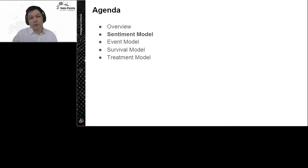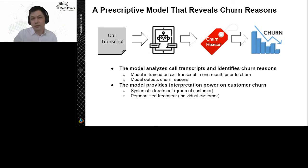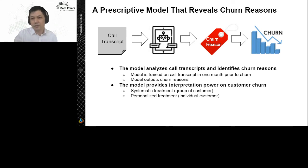Next, I'll look at each model independently. The sentiment model takes call transcripts, feeds them to an NLP model, and outputs the churn reason. The business can use the churn reasons for two purposes: systematic treatment and personalization treatment. Both treatments are similar — the only difference is the target. In systematic treatment, we target a group of customers that share the same level of risk and the same churn reasons, and pretty much everybody gets the same offer.